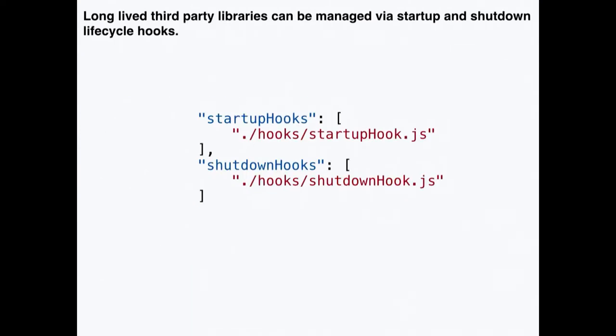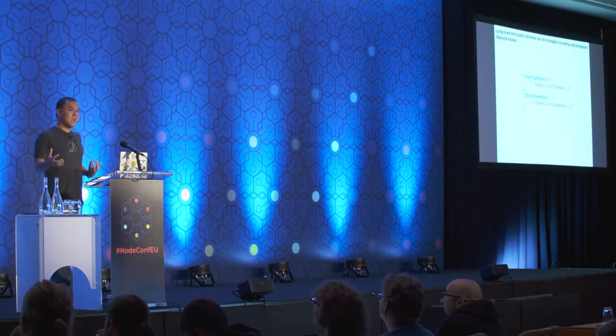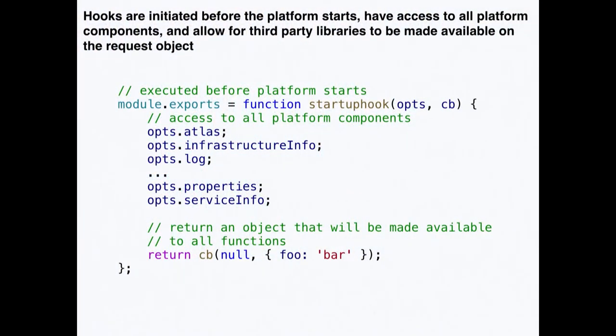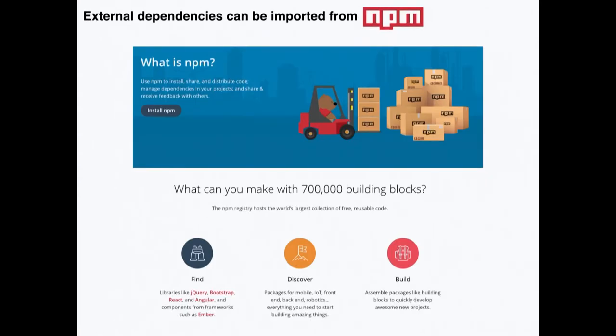You may want to bring in additional components to your functions. Traditionally you'd do that in a regular app via index.js, but in this environment we give you startup and shutdown hooks. You get access to the functioning environment, can start any set of additional components, and those are live for the rest of the process lifetime — good for adding database drivers, additional loggers, or whatever you need. The hooks fire before the platform starts and have access to all platform components. Additionally, any external dependencies can be imported from npm.